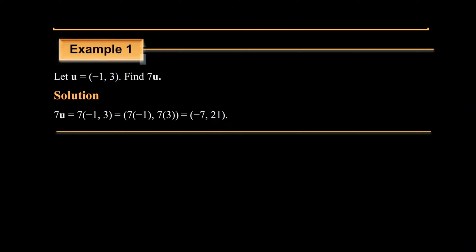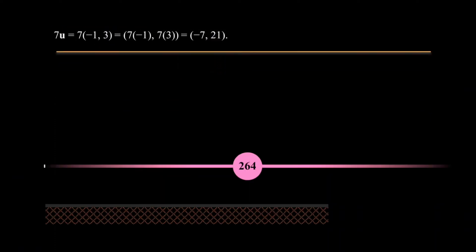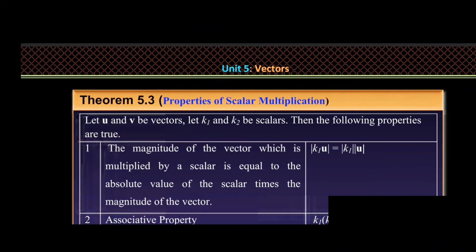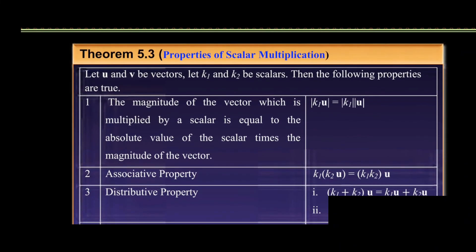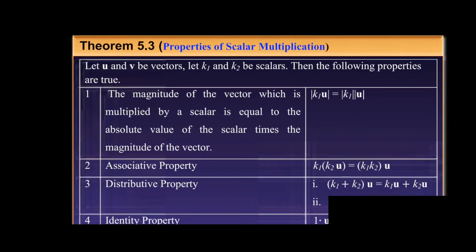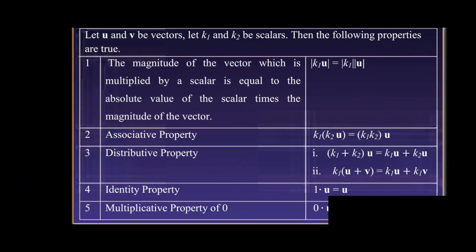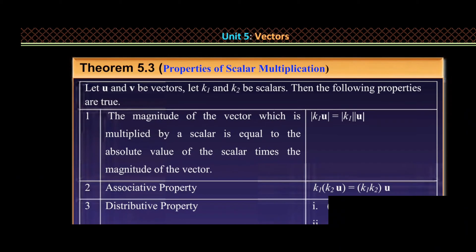A scalar is just a number — it is the symbol of the vector. In this case, we consider the properties of scalar multiplication. We consider that k1, k2 are scalars, and u, v are vectors.